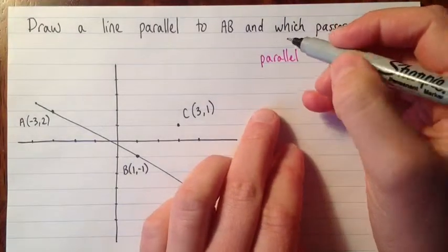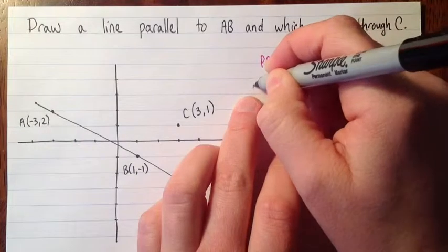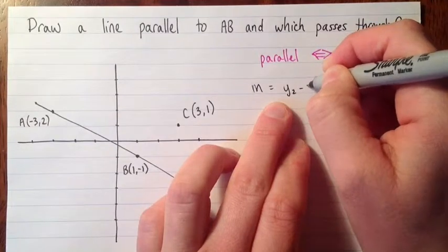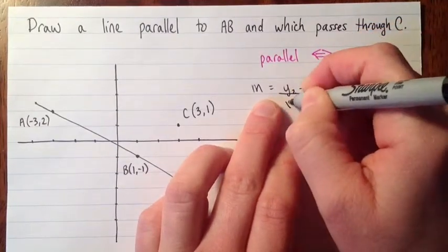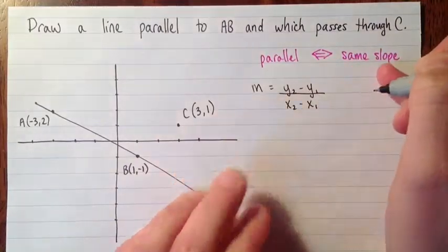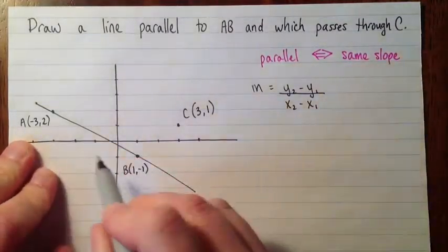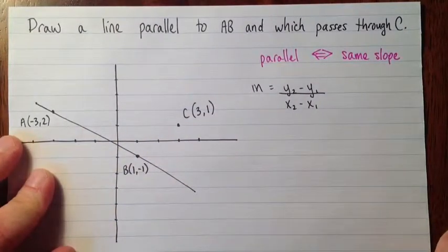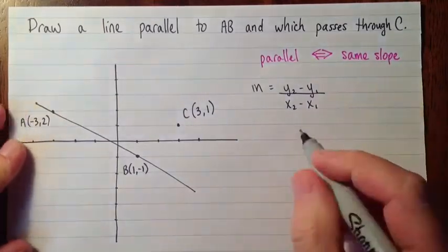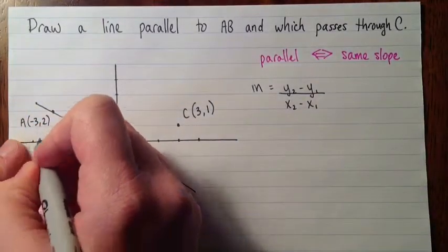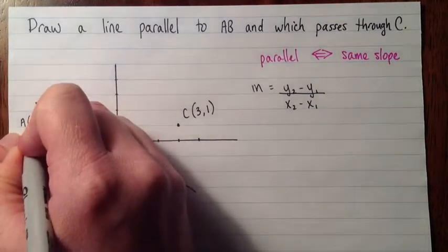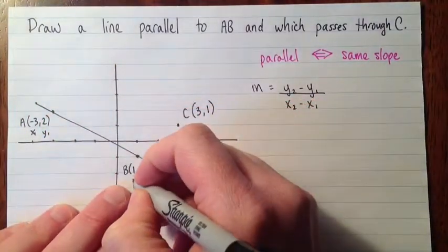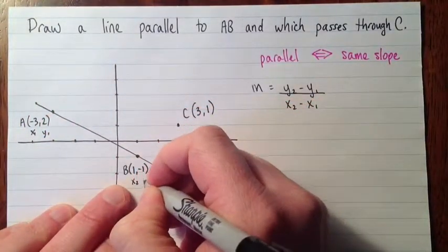So we know that slope is equal to the difference in the y's, so y2 minus y1 over the difference in the x's. So we need to label these as our x1 and y1 and x2 and y2. It doesn't really matter which point is the first point. I guess I'll go with A, just alphabetically. So I've got my A point will be the point 1, and my coordinates are xy. So I'll have x1, y1. And then for B, I'll have x2, y2.